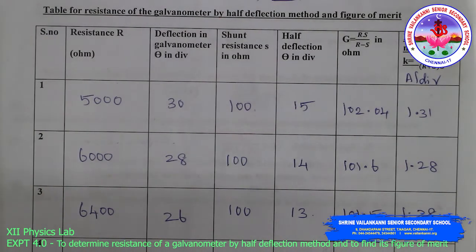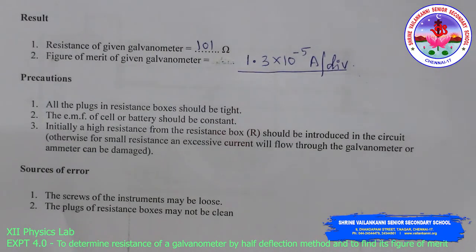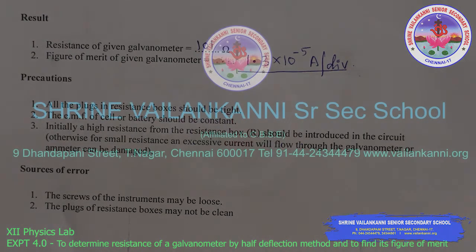We have done this for all three values taken for resistance R. Look at the tabular column — we got three different G values but all nearly the same. Similarly, we got the figure of merit K values. Result: resistance of the given galvanometer equals 101 ohm. Figure of merit of the given galvanometer is 1.3 × 10⁻⁵ ampere per division.